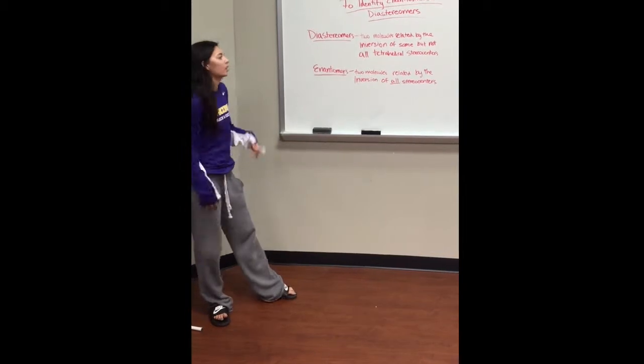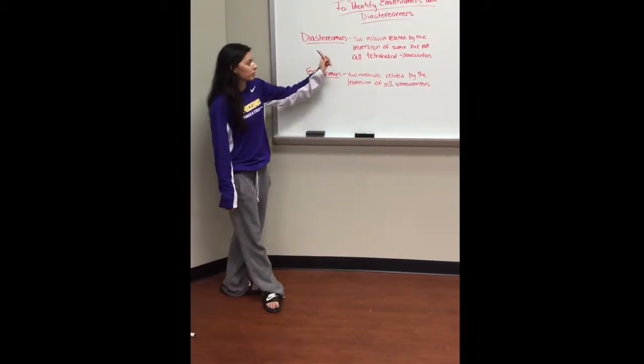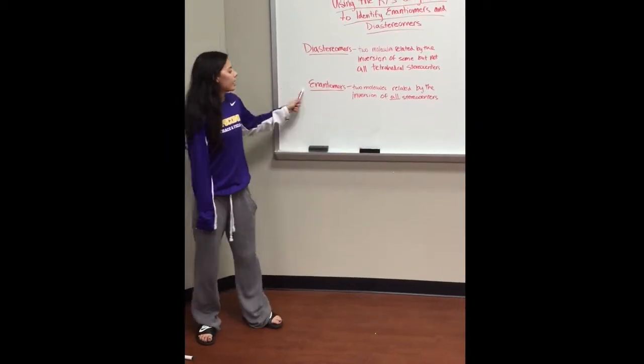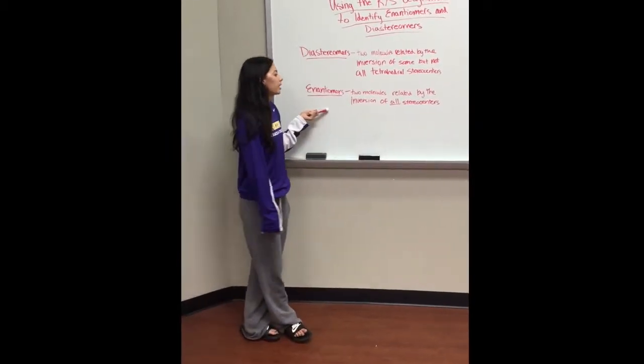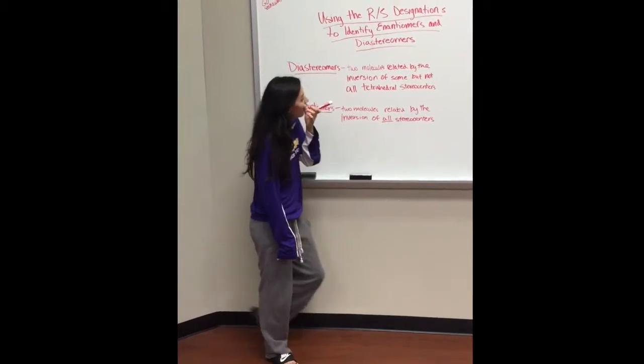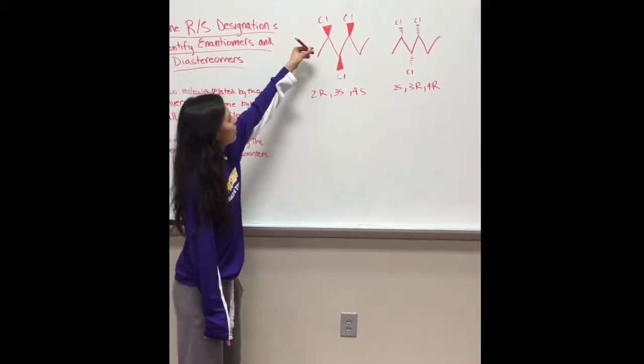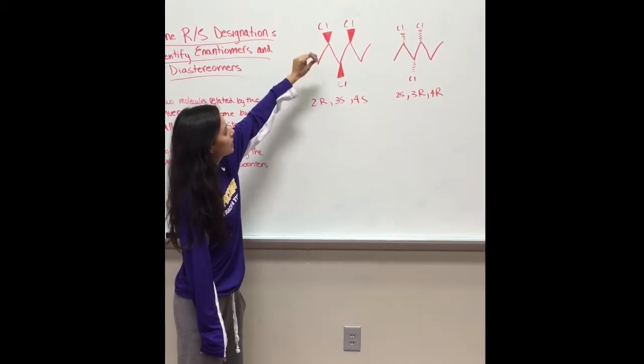Diastereomers. Diastereomers are two molecules related by the inversion of some but not all tetrahedral stereocenters. Enantiomers are two molecules related by the inversion of all stereocenters. We're going to have this molecule right here. All of the bonds here are facing towards us. This one is facing away.